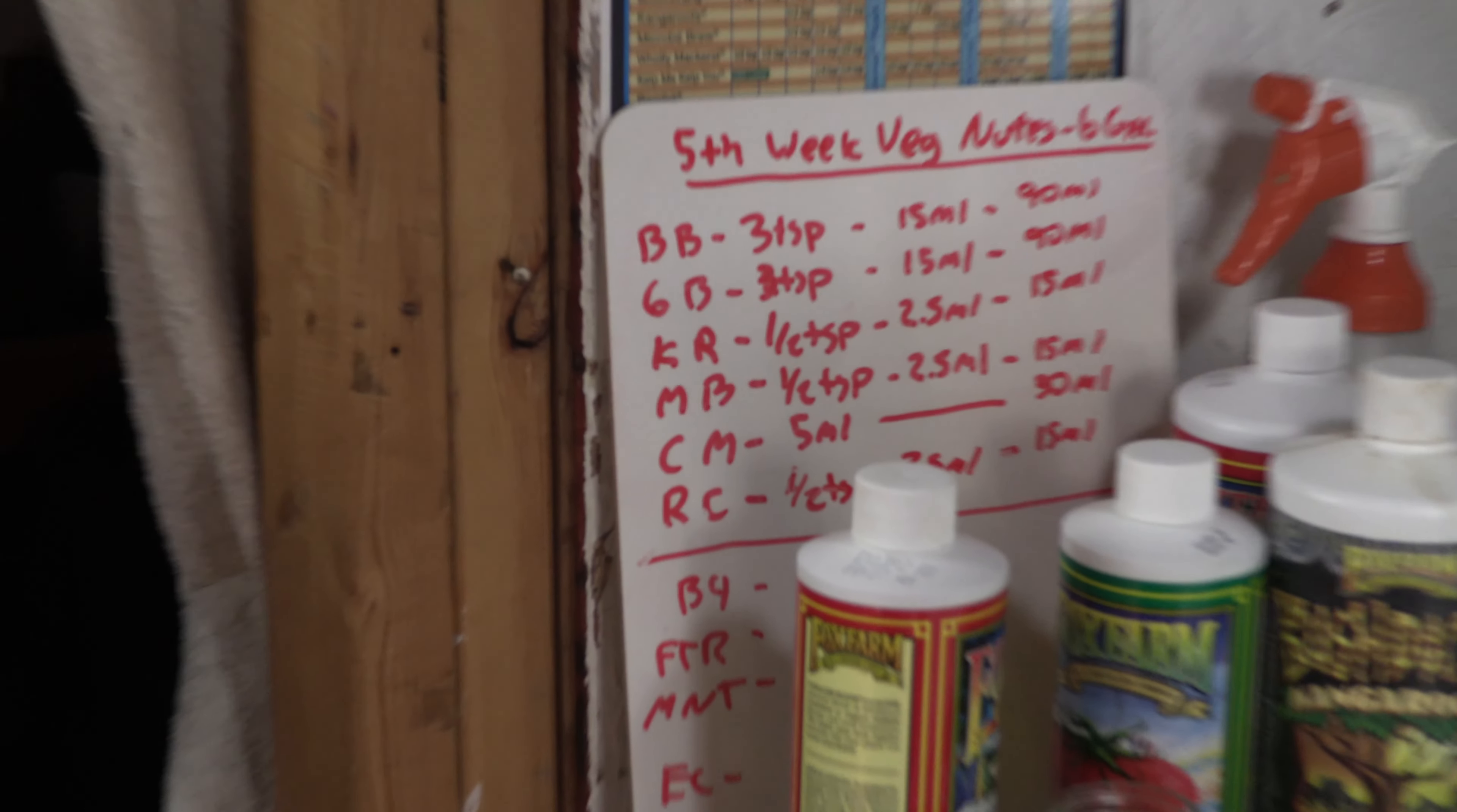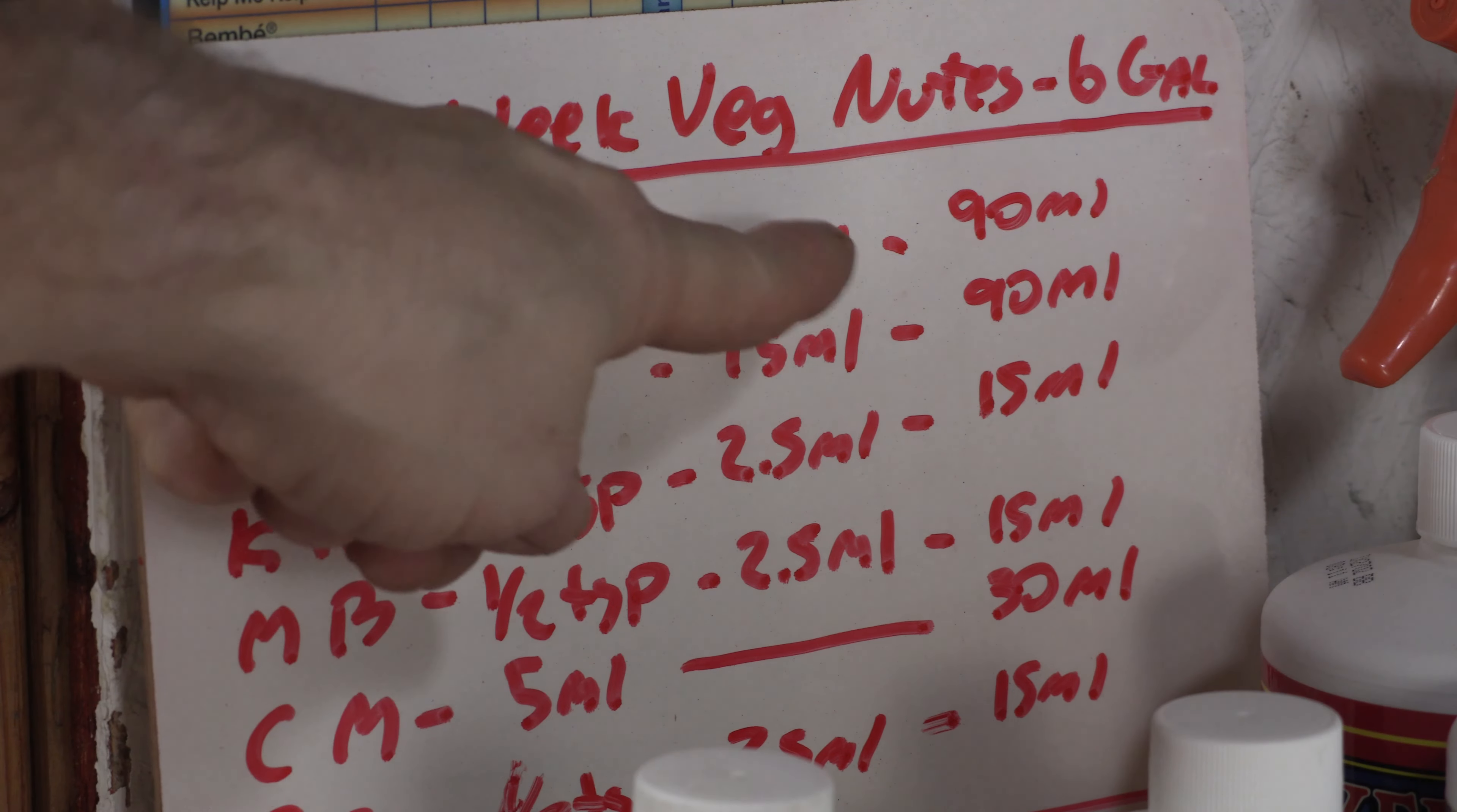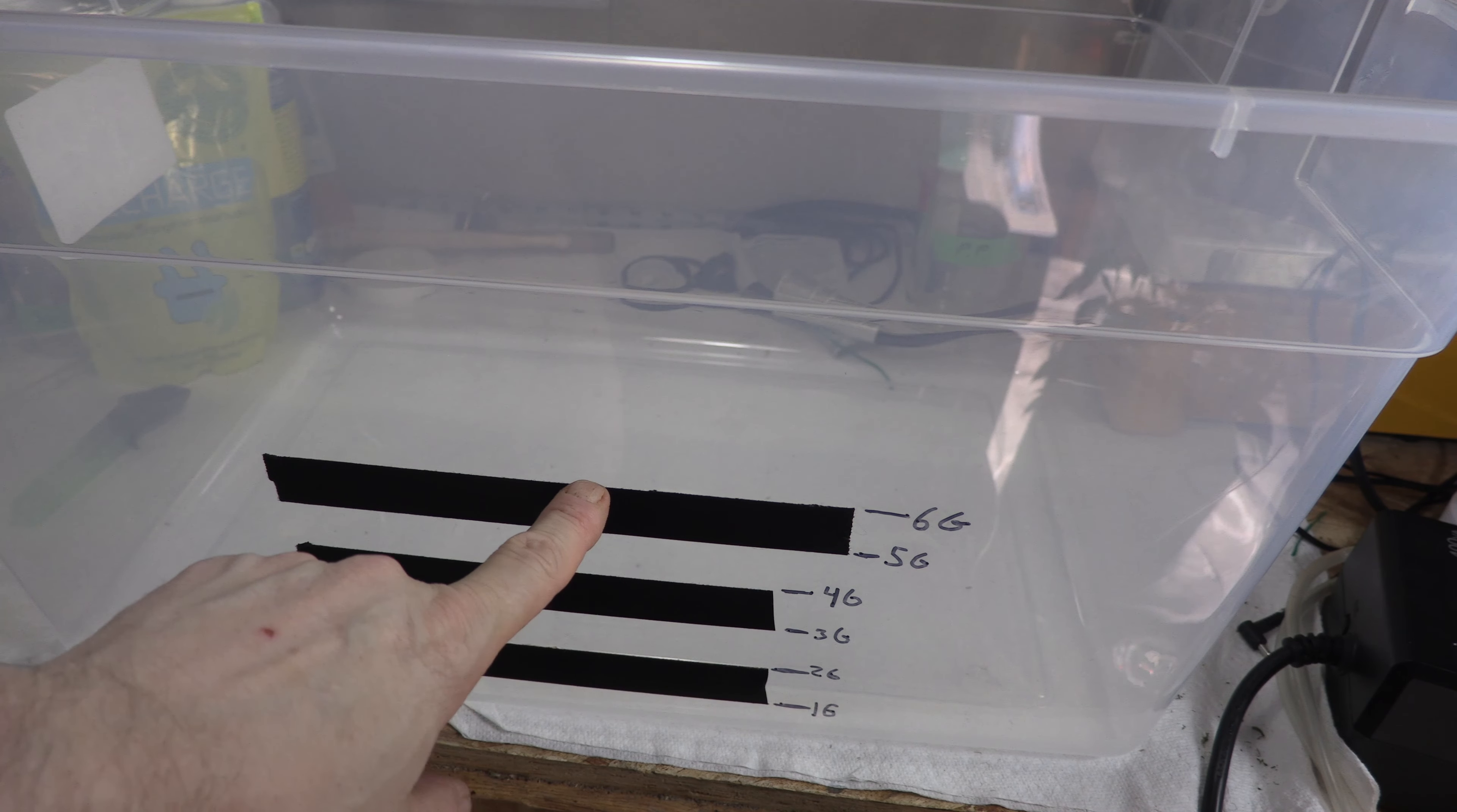So if you haven't seen my channel before, what I do is I transcode it right here onto my whiteboard and we're going to make six gallons this time. We're making more of this this go around. So all of these numbers have to be multiplied by six to get the numbers we got there. I've already labeled the containers so we should be good for that.